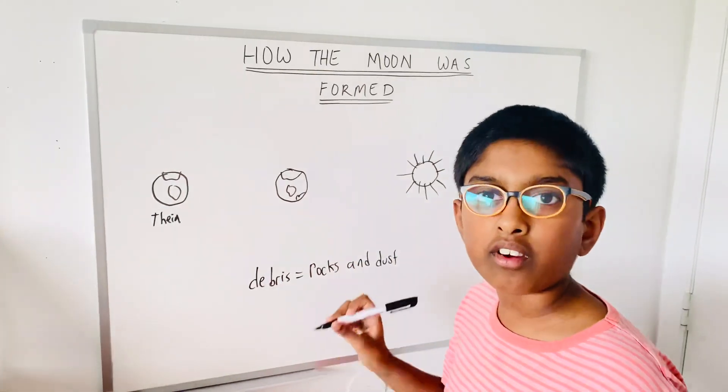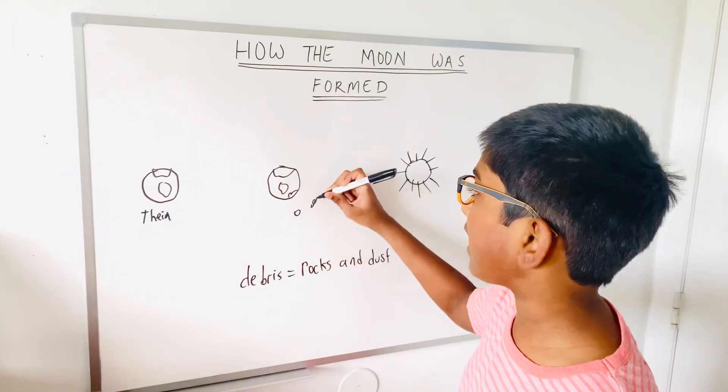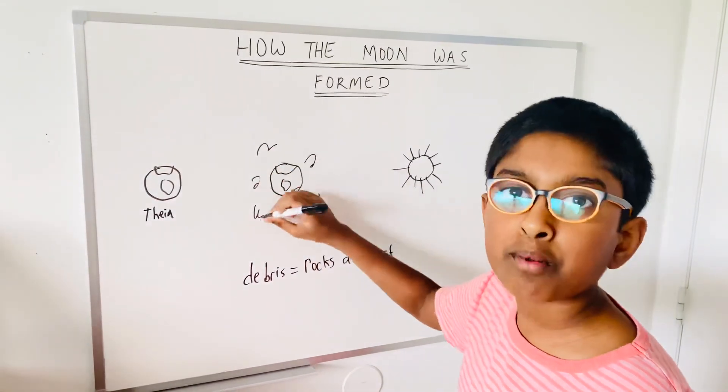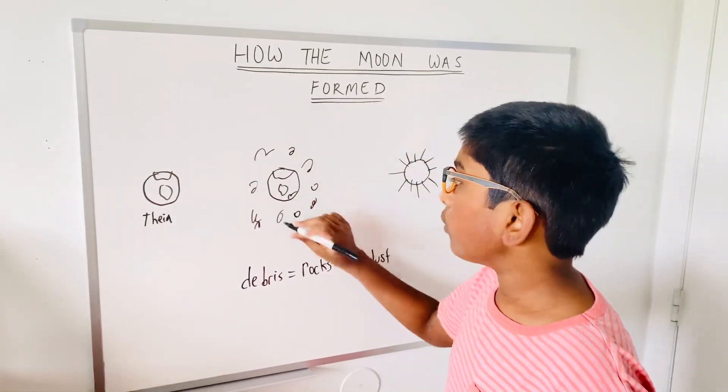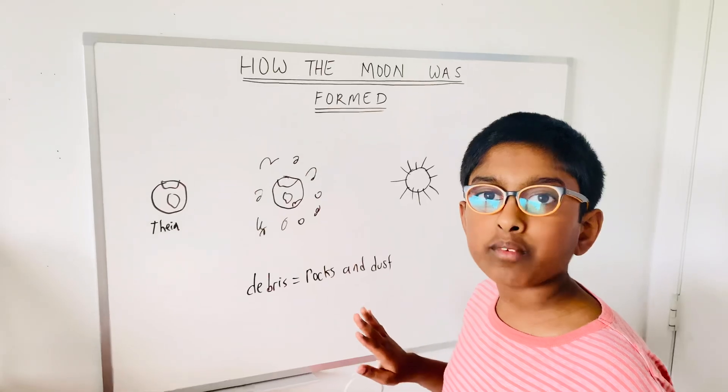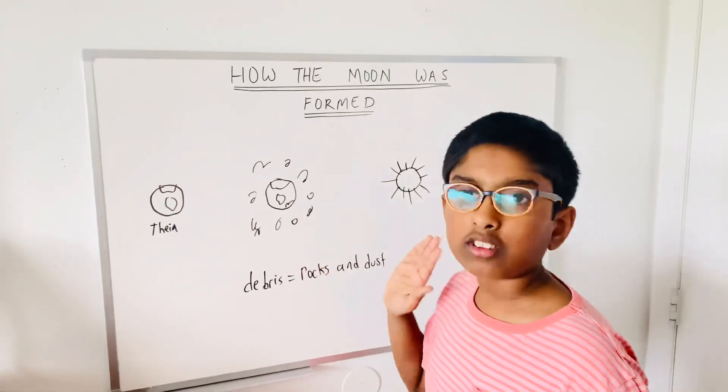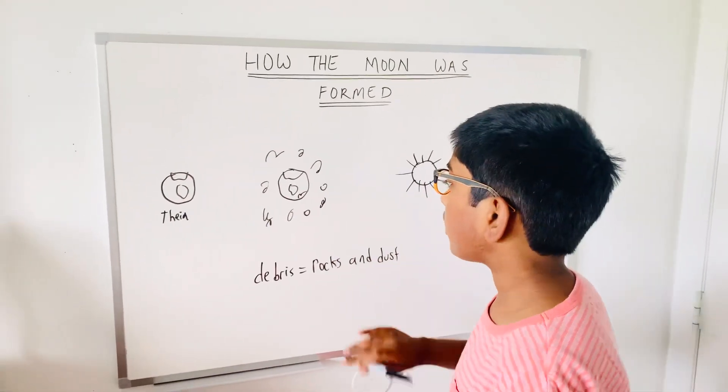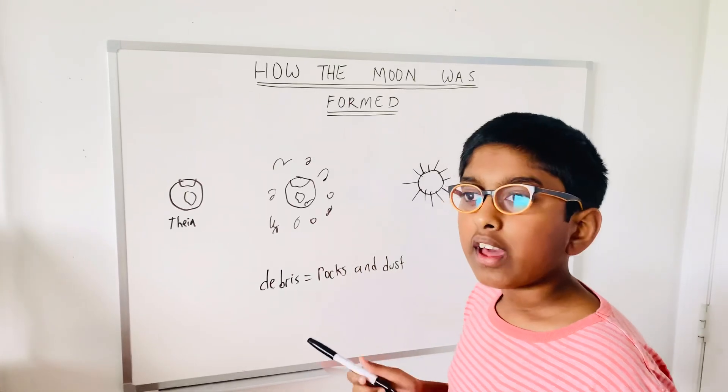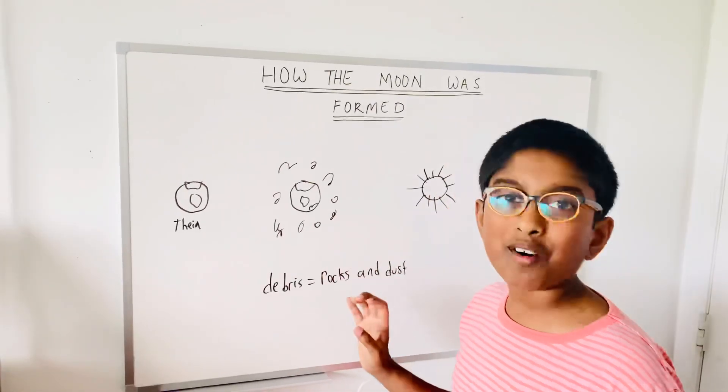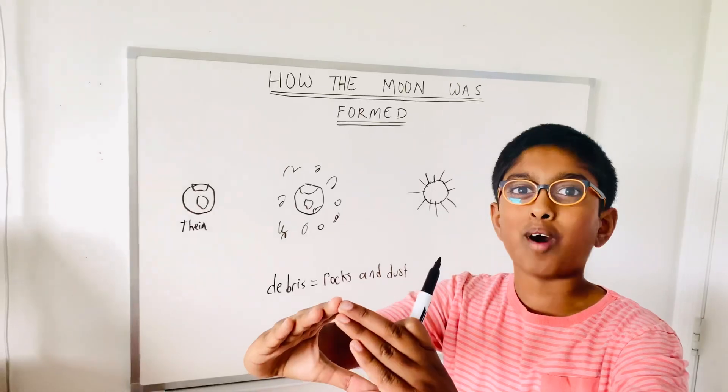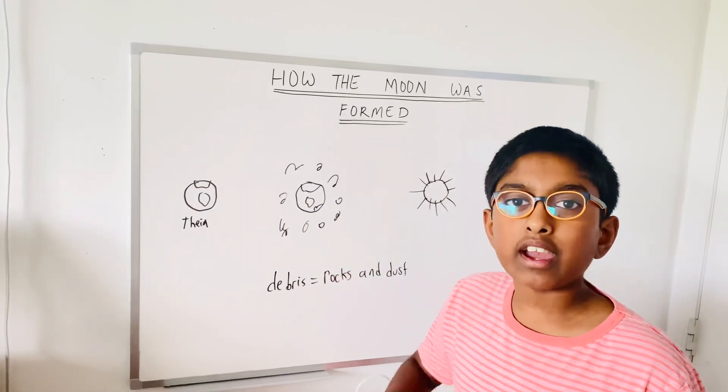When it hit the Earth, all the debris started flying into space. This is all the debris. Soon after, when the Earth healed itself, the debris started colliding with each other. And then, it formed a big ball full of lava in it. It formed a really big ball. But, there was no land on it yet.